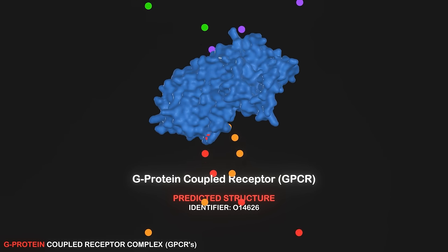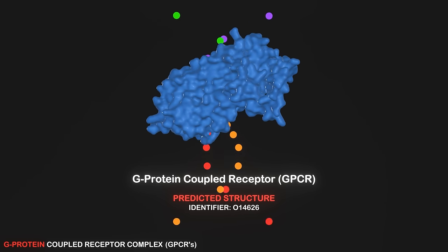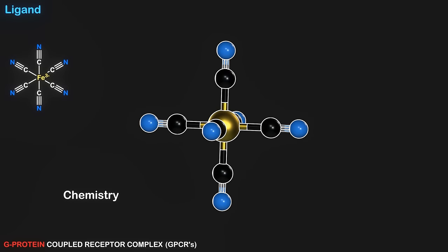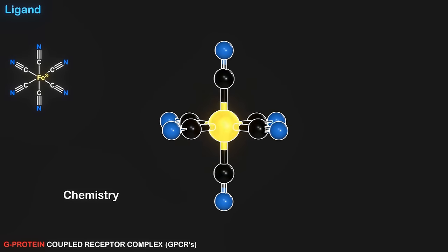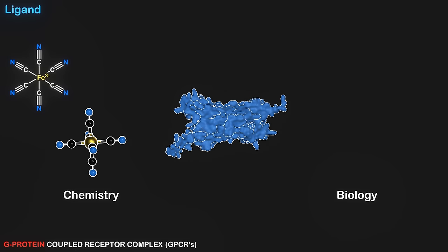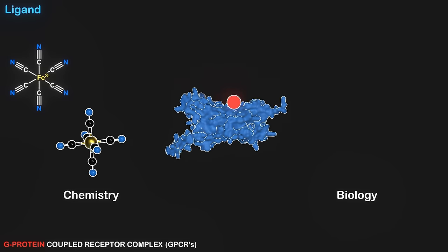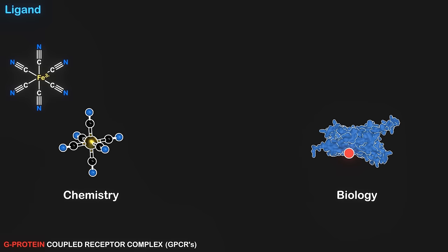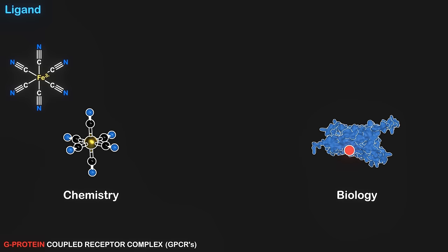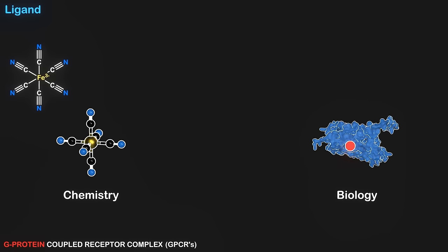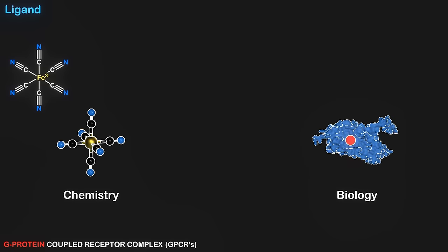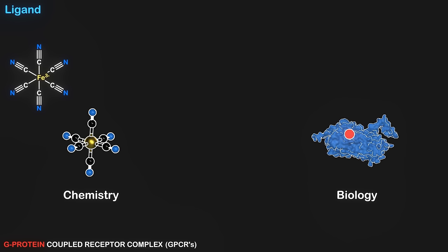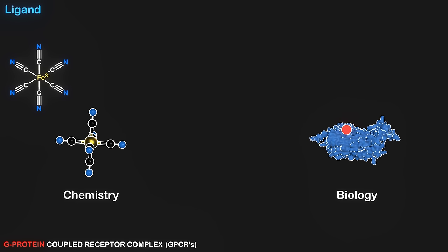GPCRs can bind a wide range of ligands, including neurotransmitters. Now what do I mean when I say ligand? In chemistry, when we're talking about ligands, normally that's something that binds to a metal center. But in the case of biology, a ligand is any molecule that binds to a receptor. So for the purposes of this video, we're talking about ligands from a biology perspective, rather than a chemistry perspective. I apologize if that upsets any chemists out there.